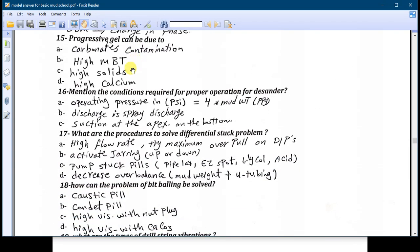Number fifteen: the progressive gel, which means the reading between 10 seconds and the reading of the 10 minutes are different and they are very large. The progressive gel can be due to four things. Number one: carbonate contamination. Number two: high MBT. Number three: high solids. Number four: high calcium.